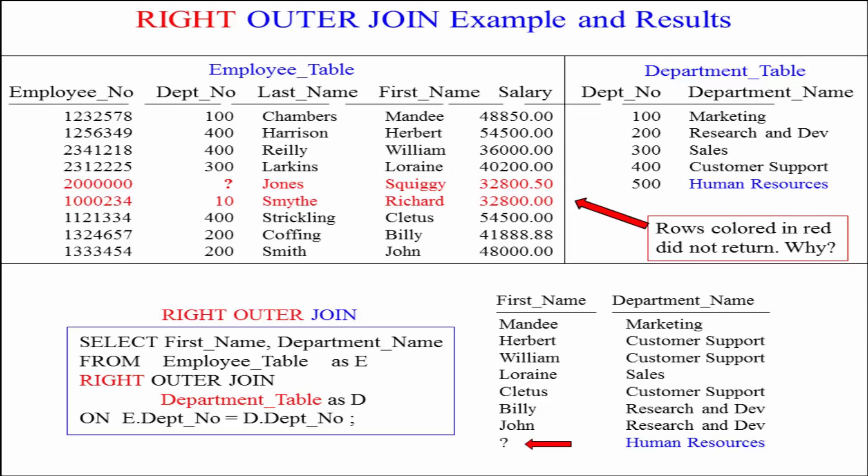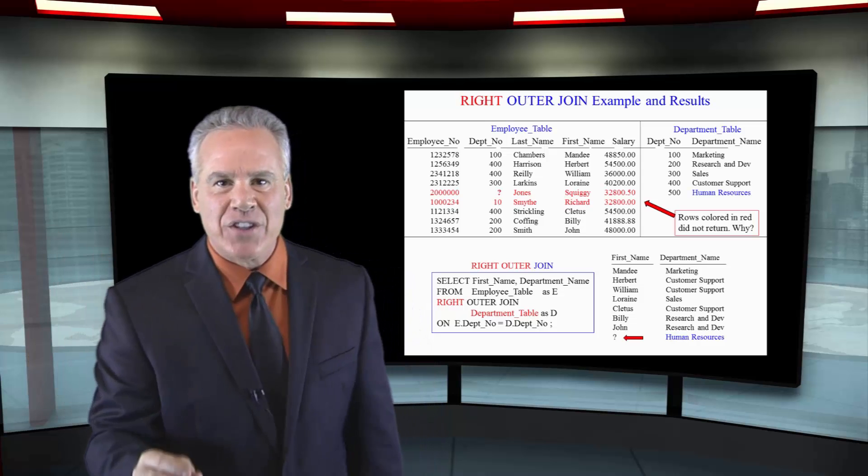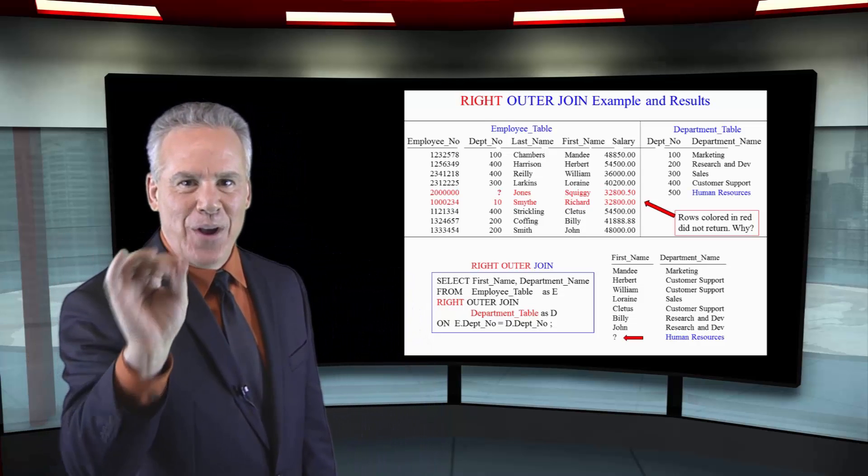Notice that Squiggy and Richard did not come back because they were in the left table. This is a right outer join - we'll bring back the matches and then any other rows that didn't match from the right table only.